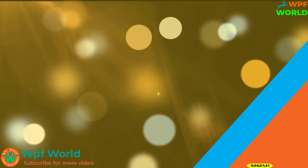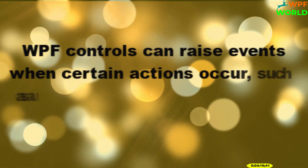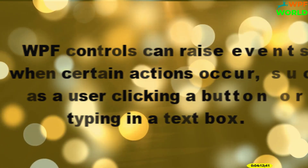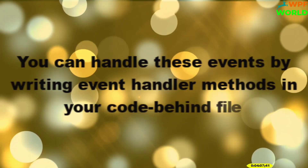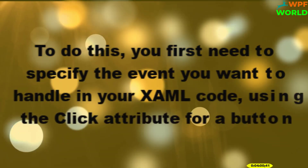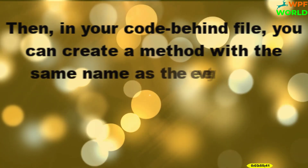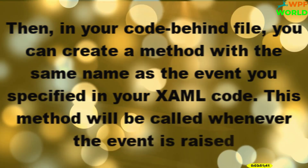Now we will learn how to handle events in WPF. WPF controls can raise events when certain actions occur, such as a user clicking a button or typing in a text box. You can handle these events by writing event handler methods in your code-behind files. To do this, you first need to specify the event you want to handle in your XAML code using the click attribute for the button. Then in your code-behind file you can create a method with the same name as the event specified in your XAML. This method will be called whenever the event is raised. Let's see with an example.